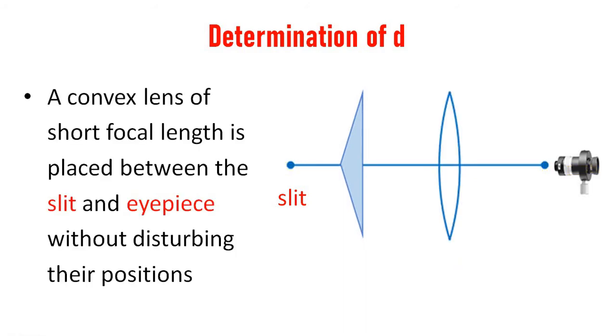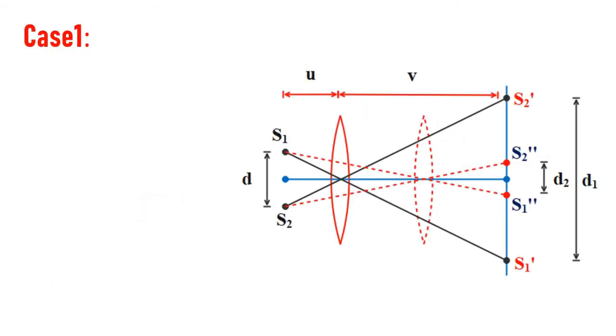A convex lens of short focal length is placed between the slit and eyepiece without disturbing their position. Now there are two cases. These things you already studied in the lower classes, though we can discuss it briefly.